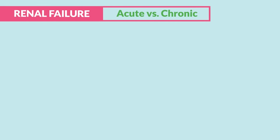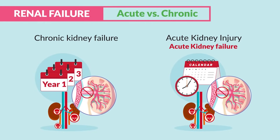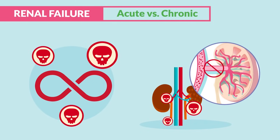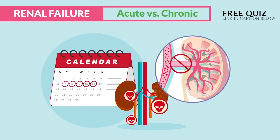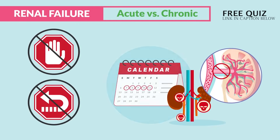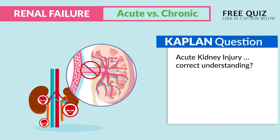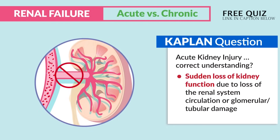For renal failure, we're covering acute versus chronic. Chronic kidney failure, also called chronic kidney disease or CKD, is long-term chronic damage to the kidneys over years and years of destruction, typically resulting in permanent damage. Acute kidney failure, also called acute kidney injury, is that sudden short-term loss of kidney function. If not stopped or reversed, it can lead to chronic renal failure. A Kaplan question asks about acute kidney injury — the correct answer is sudden loss of kidney function due to loss of renal circulation or glomerular or tubular damage.